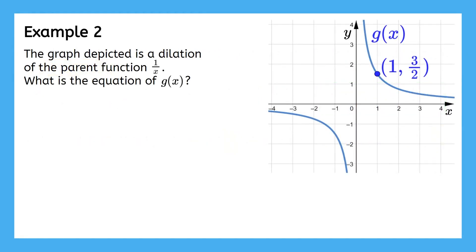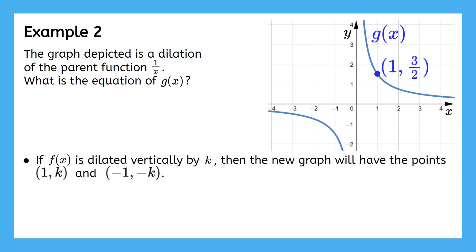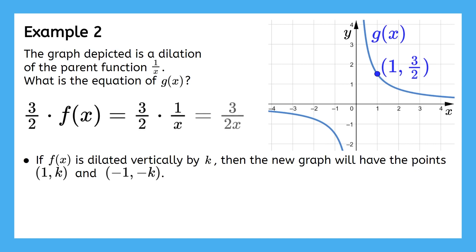We'll do one more example. The graph depicted is a dilation of the parent function one over x. What is the equation of g of x? First, take note of the point listed on the graph. This looks like our second property: if the point one comma three halves is on the graph, then this must be a vertical dilation by three halves. A vertical dilation is done by multiplying in front of the function, so the equation of this graph must be three halves times one over x, or three over two x.